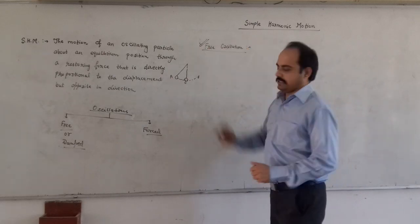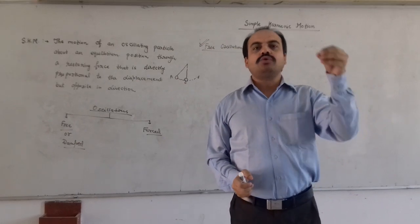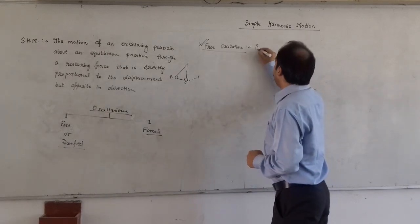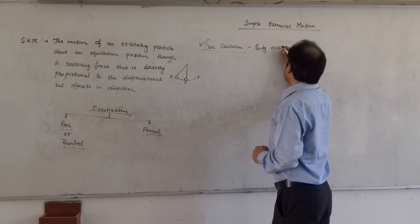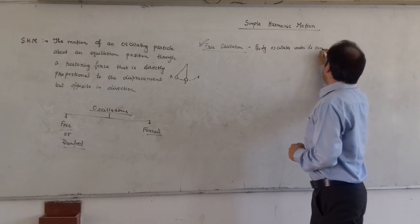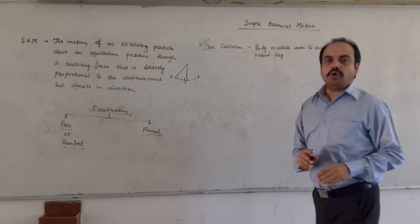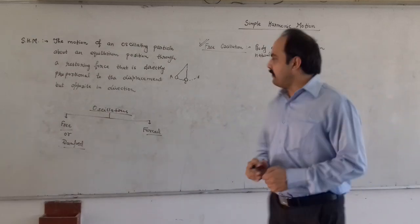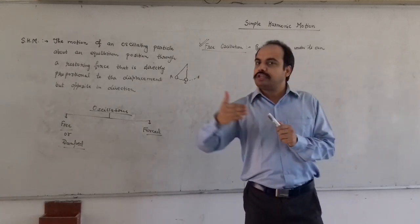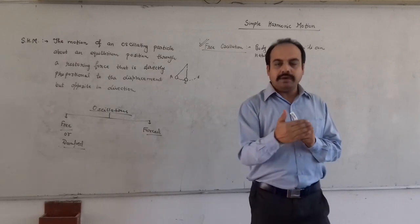What are free oscillations? When a body is moved from its equilibrium position and left under its own natural frequency, that is free oscillation — the body oscillates under its own natural frequency with no external force. After some time, the amplitude continuously decreases and the body comes to rest finally at the equilibrium point.